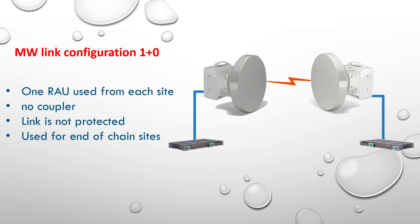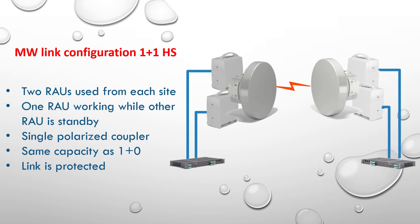For the microwave link configured as 1+0, the link is installed with only one ROU from each site to carry all the traffic. The link uses one IF cable and one IDU from each site. Although this type is easy to install, its major disadvantage is that if any failure takes place at any ROU from either site, all traffic will be affected as no backup exists.